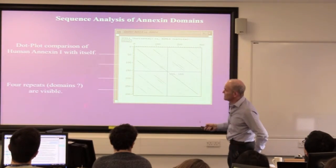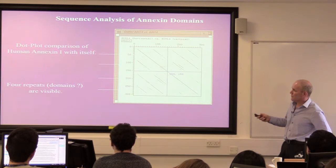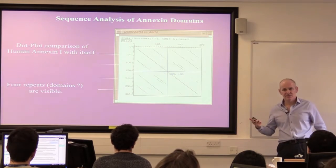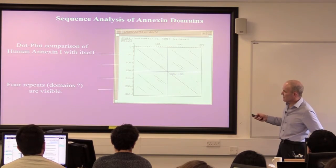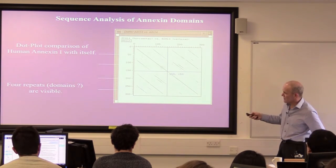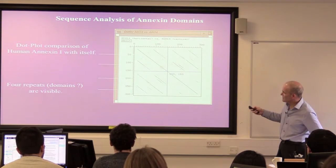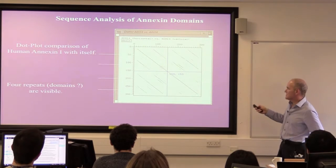One of the things you can do is take a protein sequence and compare it to itself if you're looking for repeats. This is a dot plot comparison of annexin 1 compared to itself. You basically put a sequence down this axis, the same sequence along here, and wherever the amino acids are identical or similar according to their physicochemical properties, you put a dot. Across the major diagonal, they're identical because it's the same full-length sequence. But when you have repeats, you see lines running parallel to the main diagonal, and this shows you there are really four repeats.